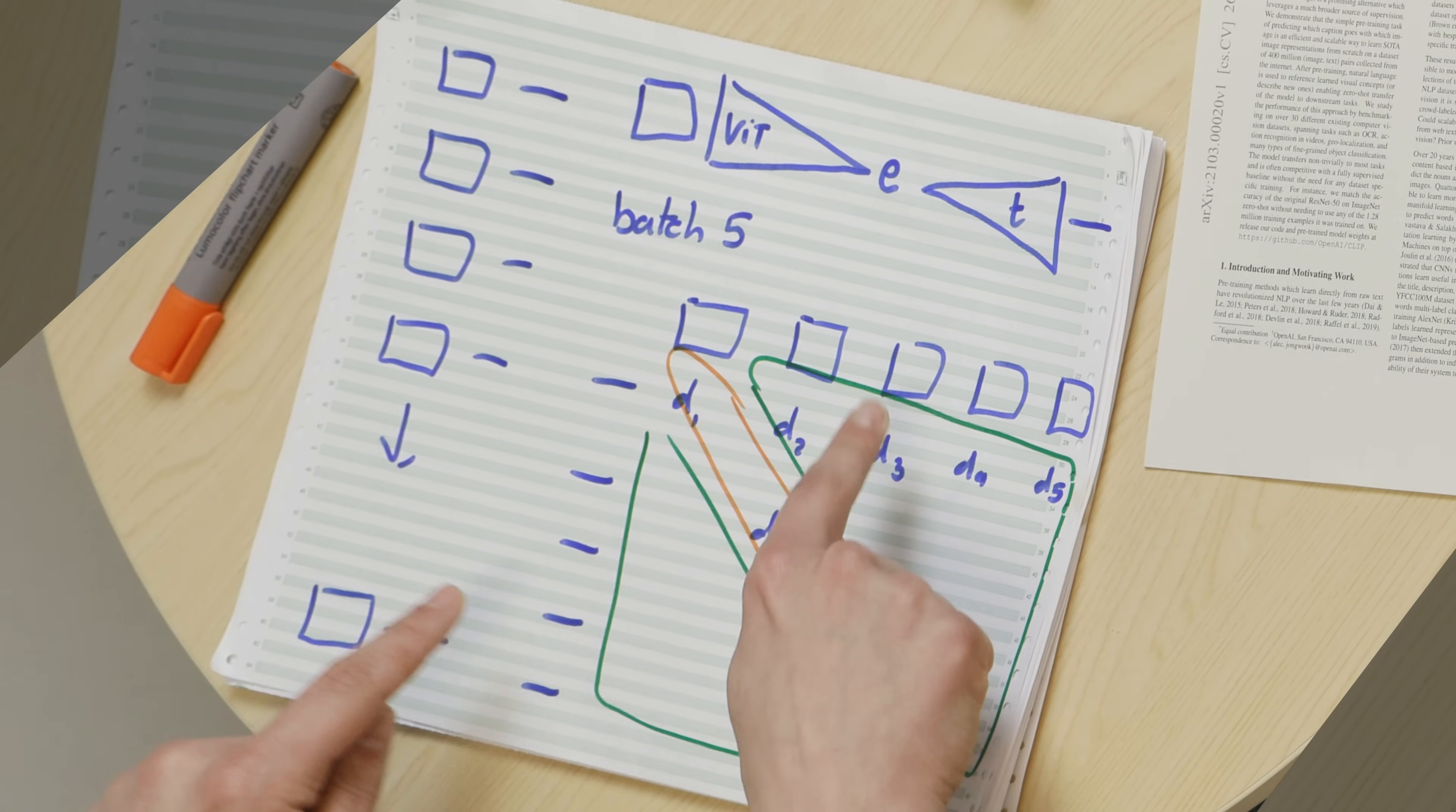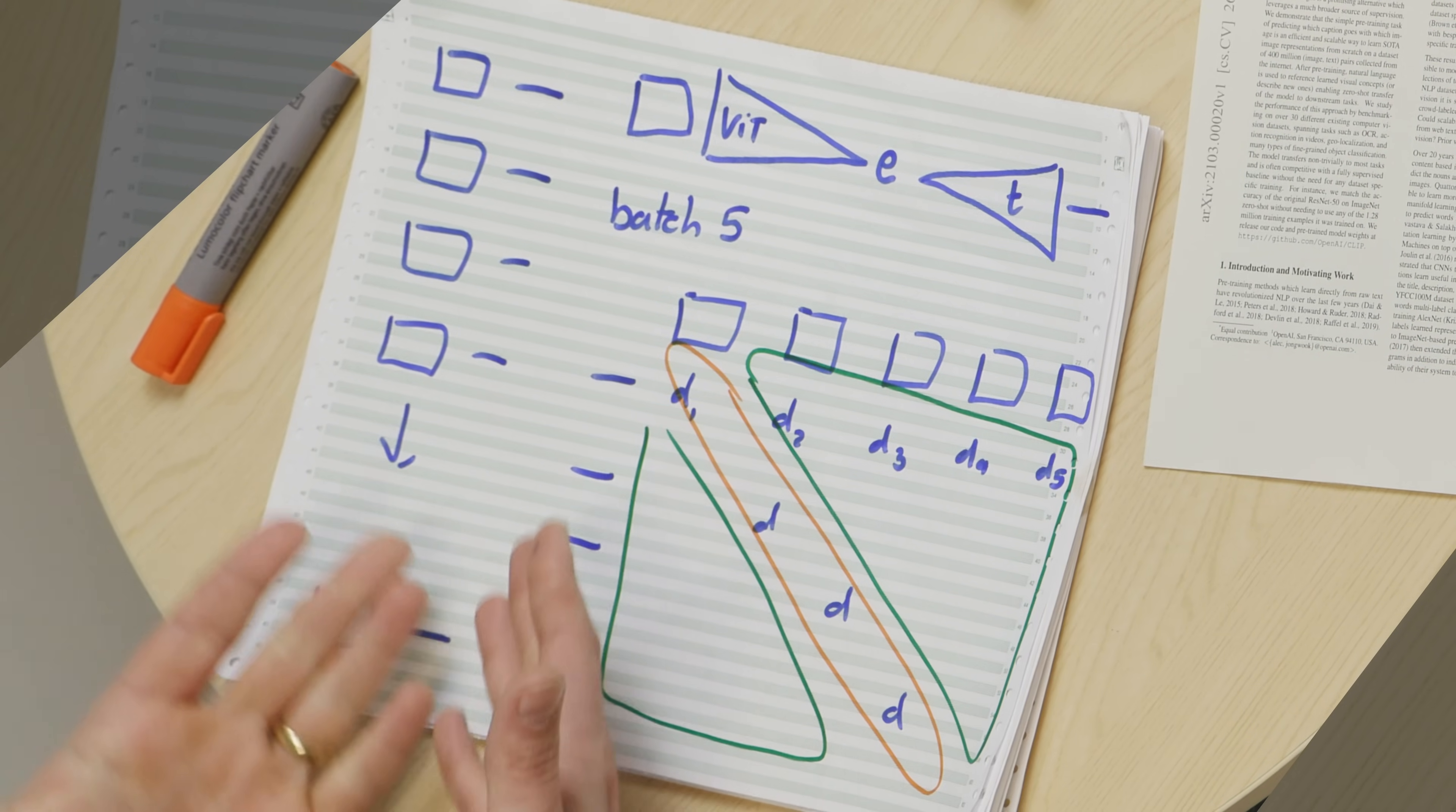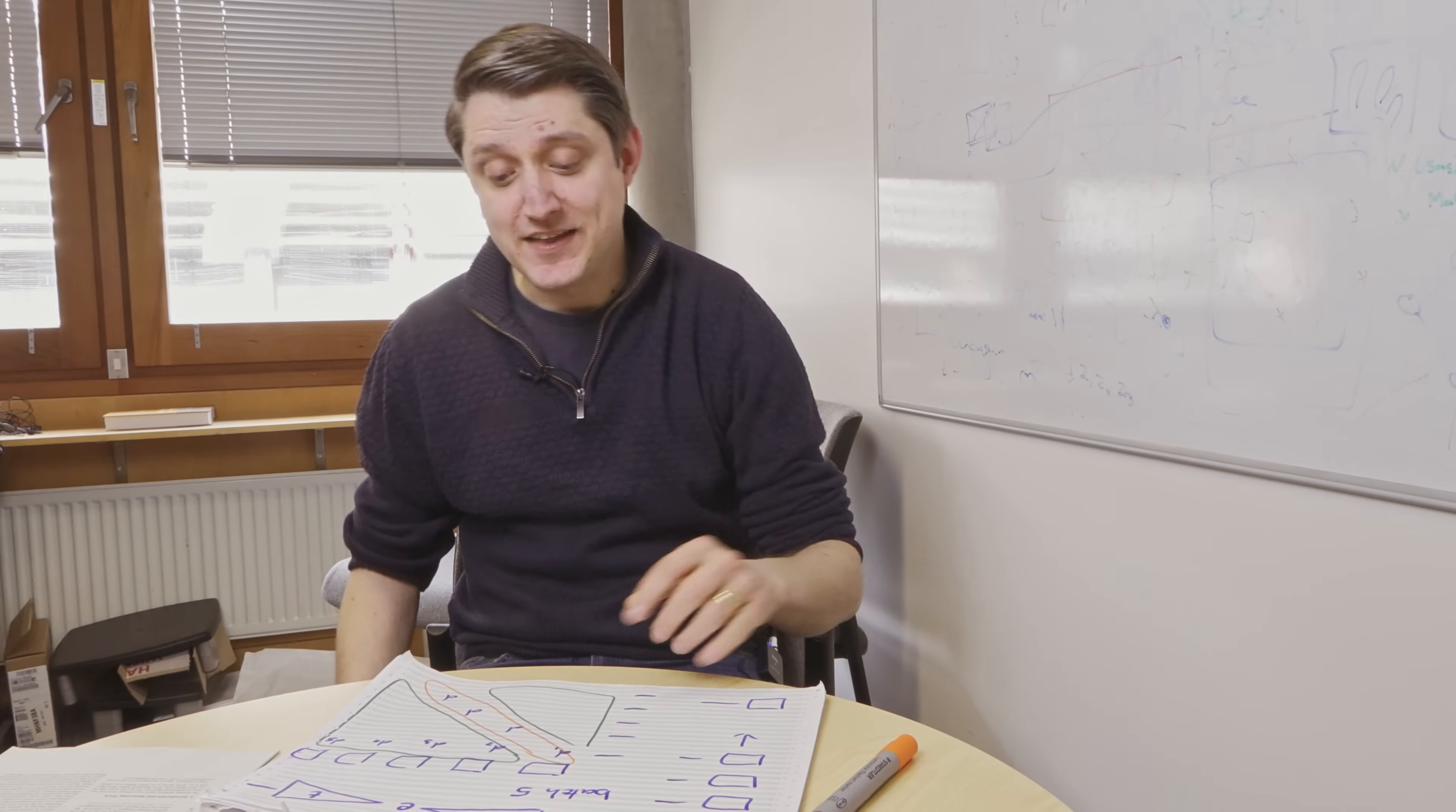We're going to train this VIT, and we're going to train this T to encode these things so that they meet in the middle like this. Or if they're a different image, so if it's a picture of a cat, but the text says a man in front of a boat, it doesn't embed them into the same place. It embeds them into very different places.